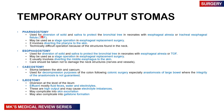You may have a pharyngostomy, which is used to divert solids or saliva to protect the bronchial tree — for example in cases with esophageal atresia or tracheoesophageal fistulas. This may be used as a staged operation in esophageal replacement surgery and involves diverting the pharynx to the skin. It is a technically difficult operation because of the structures in the neck. Similarly, an esophagostomy diverts the middle esophagus to the skin, also used in esophageal atresia, tracheoesophageal fistulas, and esophageal replacement surgery, with care taken not to damage the nerves and vessels in the neck.